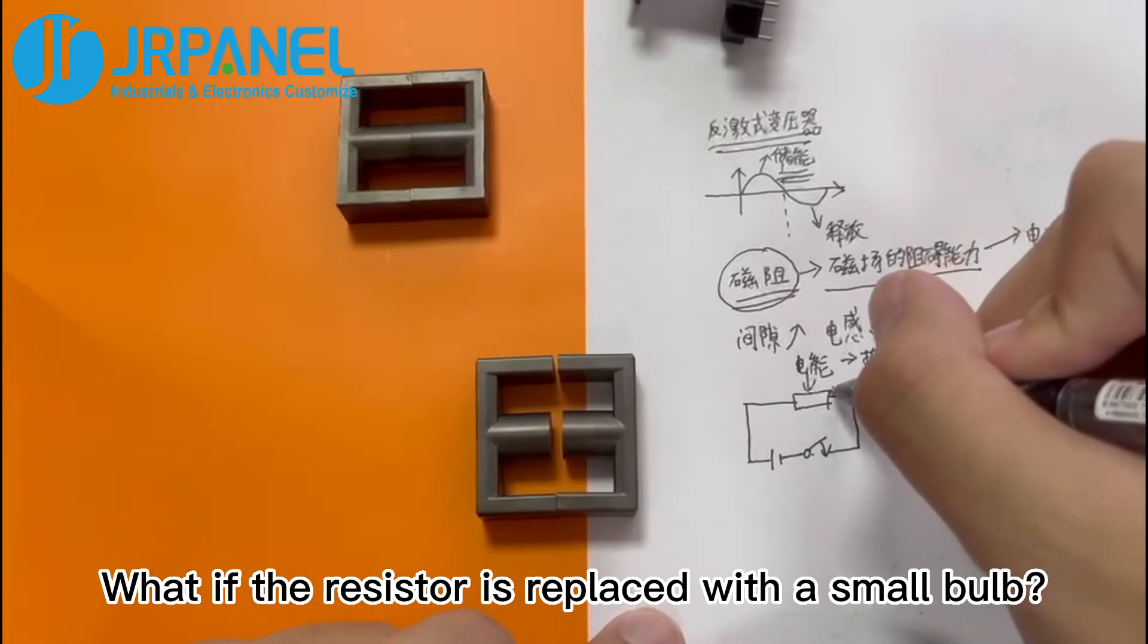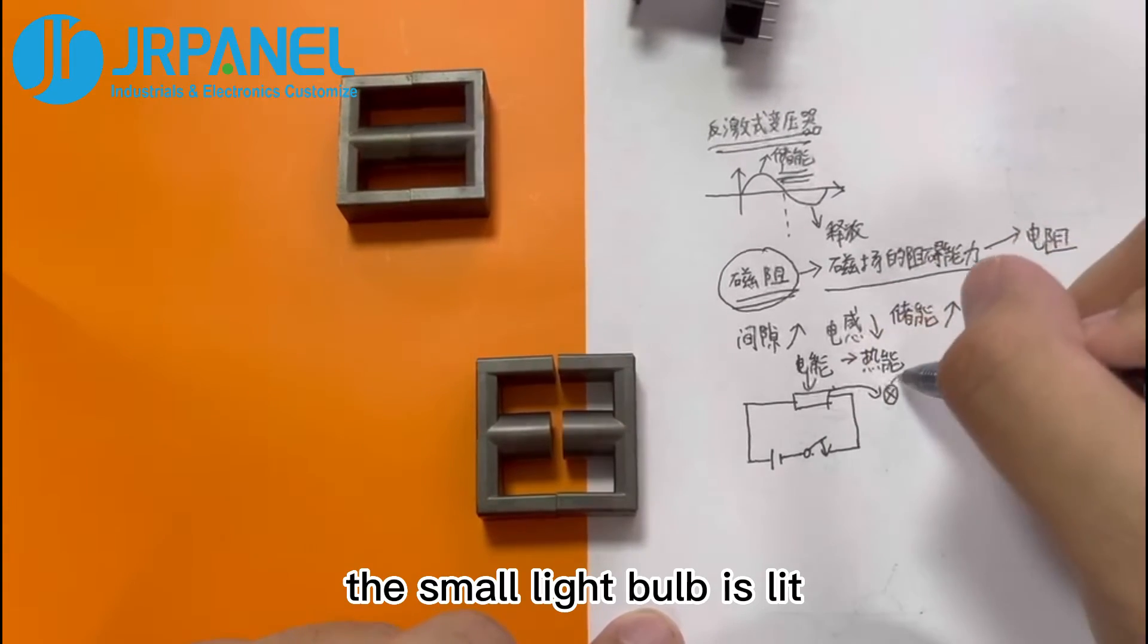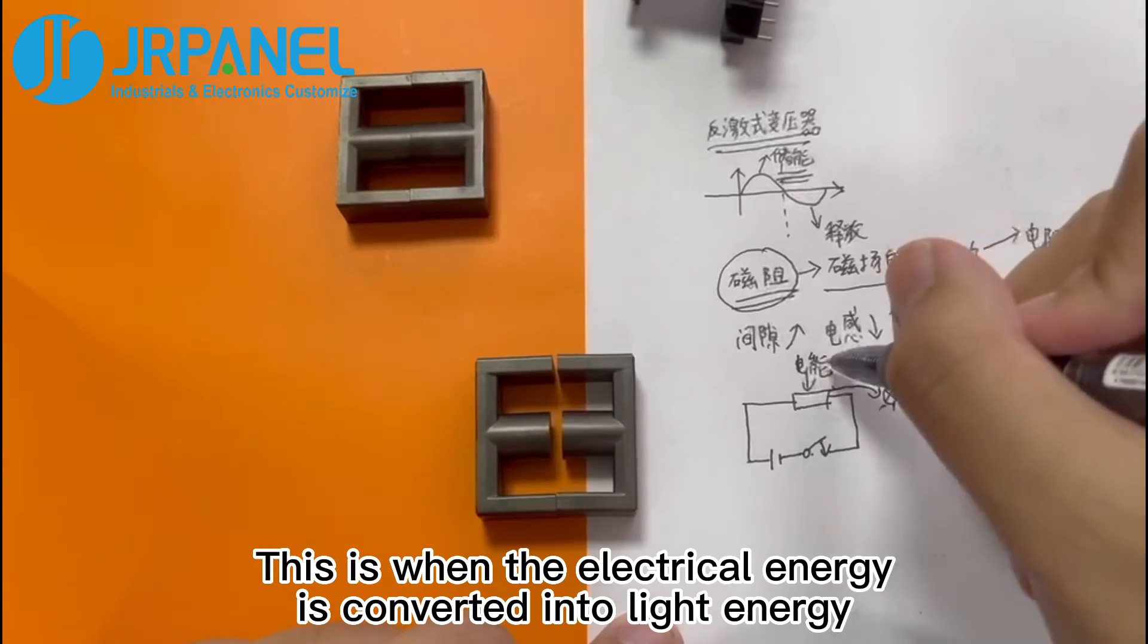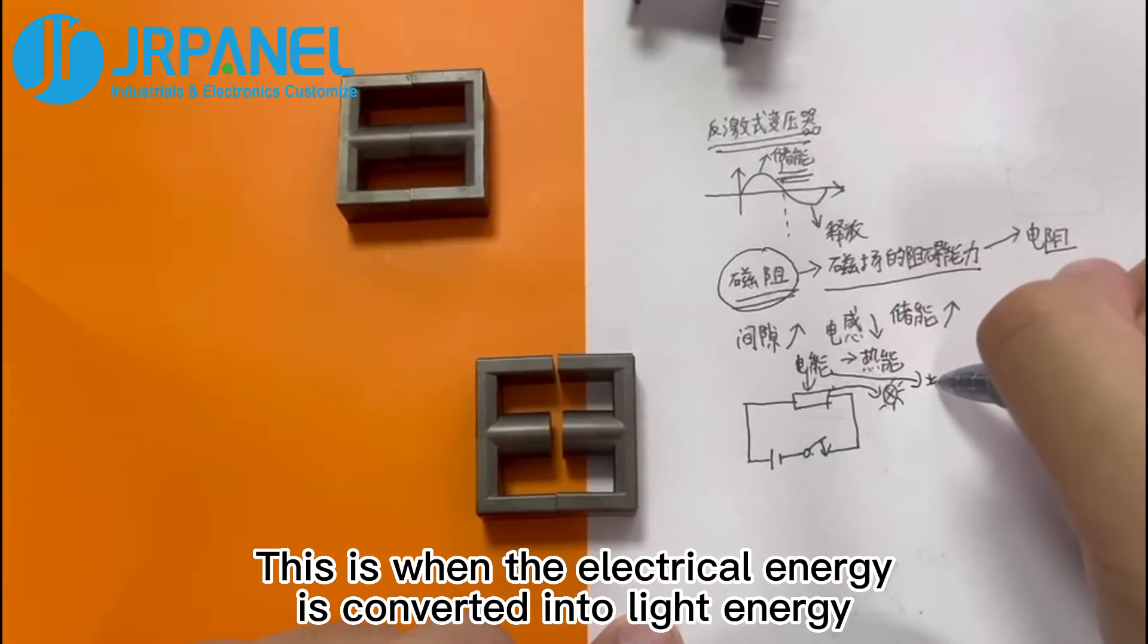What if the resistor is replaced with a small bulb? When the circuit is switched on, the small light bulb is lit. This is when the electrical energy is converted into light energy.